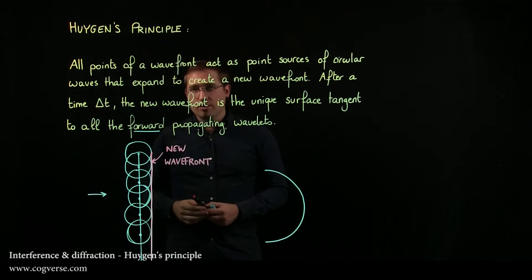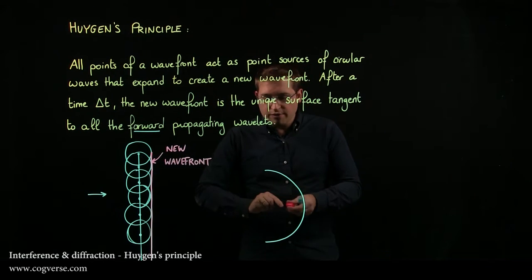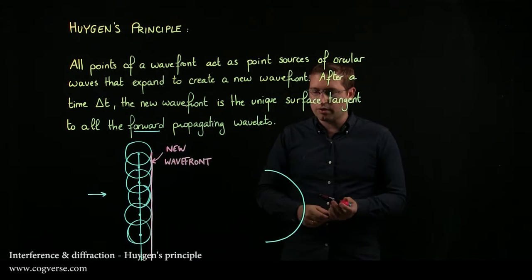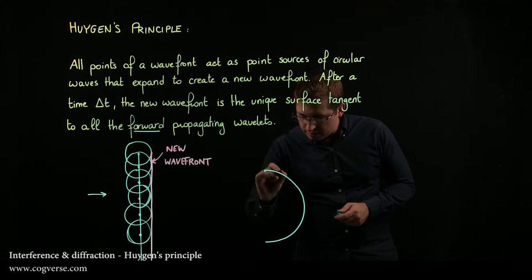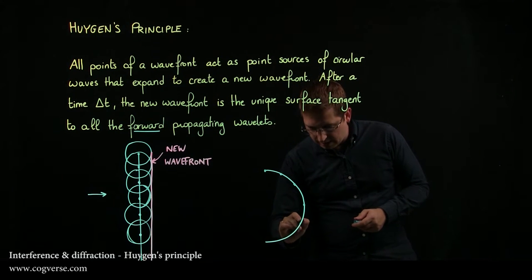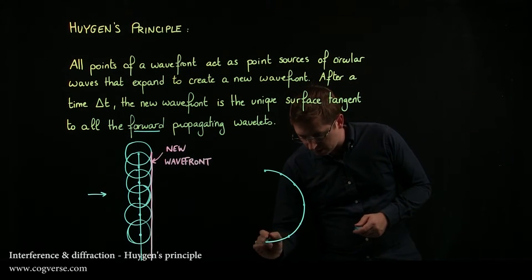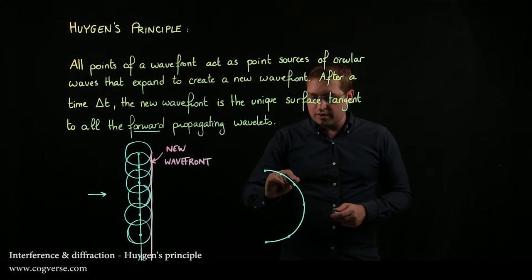Take a circular or spherical wavefront. Let's take a few points, not all of them, but a few of them just to get an idea and see that it works exactly the same way. This point, this one, this one, etc. They're all sources of circular waves.